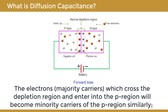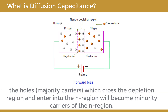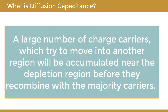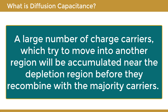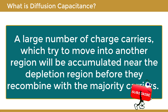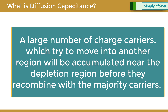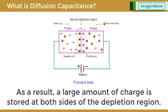The electrons — the majority carriers — which cross the depletion region and enter into the P region will become minority carriers of the P region. Similarly, the holes — majority carriers — which cross the depletion region and enter into the N region will become minority carriers of the N region. A large number of charge carriers which try to move into another region will be accumulated near the depletion region before they recombine with the majority carriers. As a result, a large amount of charge is stored at both sides of the depletion region.